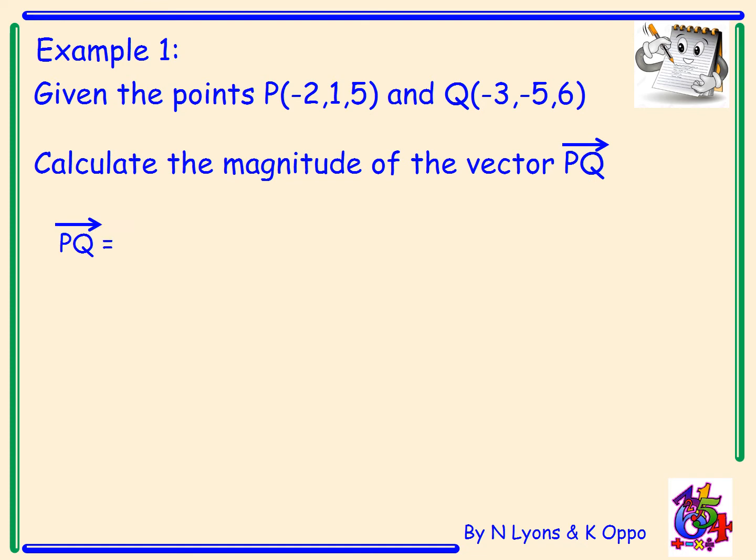So first of all we have to work out what is the vector PQ. So the vector PQ is just the position vector Q, subtract the position vector P. So that gives us minus 3, minus 5, 6, subtract minus 2, 1, 5. So the vector PQ equals, minus 3 minus minus 2 is just minus 3 plus 2 is minus 1. We've got minus 5 minus 1 gives me minus 6. And 6 take away 5 is 1. So the vector PQ has components minus 1, minus 6, 1.